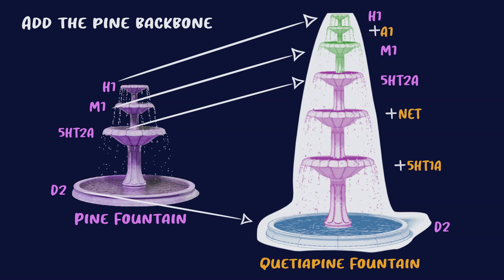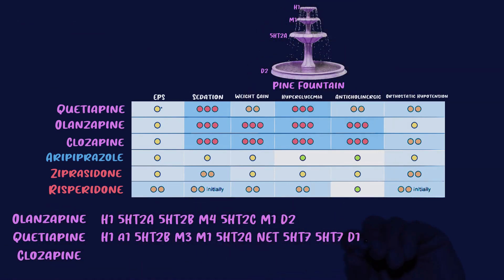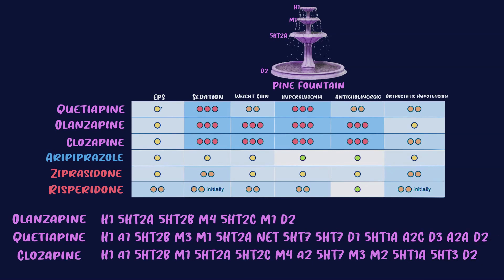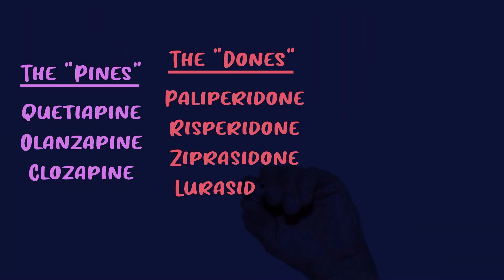To take the differences between drug classes one step further, let's go back to the antipsychotic side effect chart and pull up the pine class. For orthostatic hypotension, clozapine hits alpha-1 and quetiapine hits alpha-1, but the alpha-1 receptor is missing for olanzapine. Sure enough, that's reflected in the side effects: quetiapine and clozapine have two orange dots, while olanzapine has one orange dot for orthostatic hypotension. Once you see these drugs as subclasses, you can pick up little patterns within the classes.